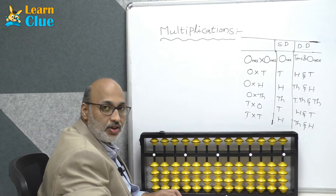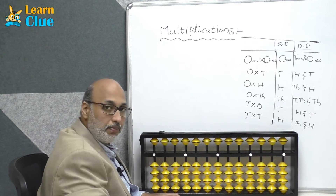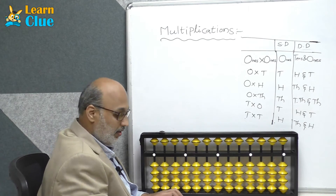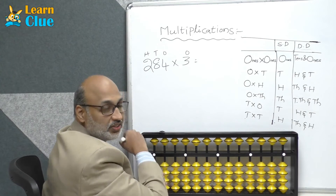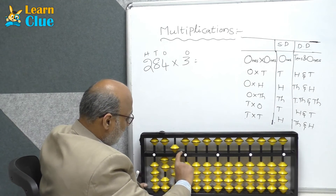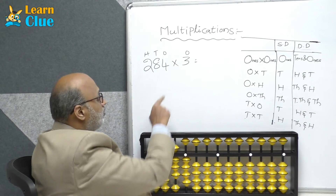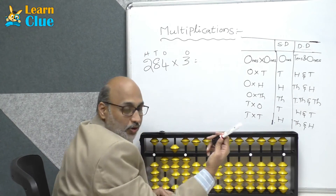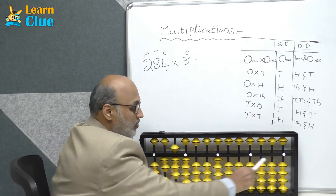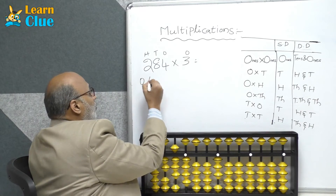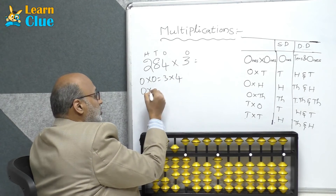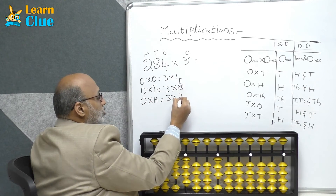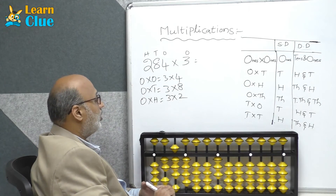Hi students, in this session we will again see multiplications, but here we will do three digit into single digit and four digit into single digit also. Let's place the problem on the abacus. 284 is the multiplicand, 3 is the multiplier. For our convenience, any dot's place is in the units place — the product will replace here. Ones into ones is 3 into 4, ones into tens is 3 into 8, and ones into hundreds is 3 into 2.